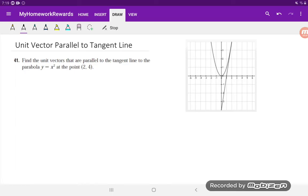So our game plan to solve this problem is: first we're going to figure out what the slope of the tangent is to the curve y equals x squared at the point x equals 2. And then next, we'll use that slope to figure out what sort of vector we need to be parallel to it, and then we'll find the unit vector of those vectors.